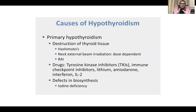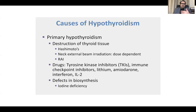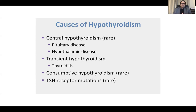Primary hypothyroidism can be due to destruction from Hashimoto's, neck external beam radiation, or RAI therapy; due to drugs like tyrosine kinase inhibitors, immune checkpoint inhibitors, lithium, amiodarone, or interferon; or due to defects in biosynthesis such as iodine deficiency. Less commonly, central hypothyroidism arises from pituitary or hypothalamic disease, and there may also be transient hypothyroidism in cases of thyroiditis.